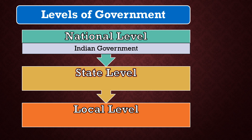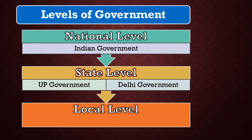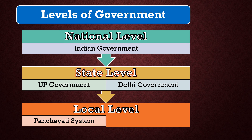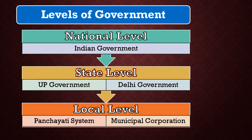Every state has its own government. The state government deals with issues related to the entire state — they have authority to take action only within the boundaries of their state. At the local level, government in a village, town, or locality is called local government. It deals with the problems faced by local people. For example, the panchayati system at the village level, or zila parishad, and in rural and urban areas there are municipal corporations and municipal committees — these are all different forms of government at the local level, helping to run administration well.